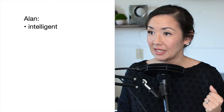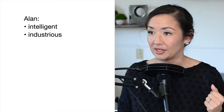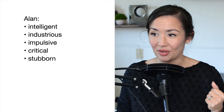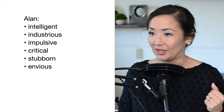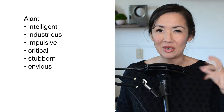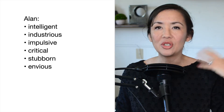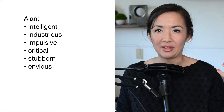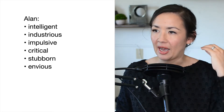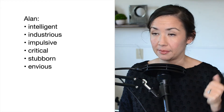Here's a really great example. So here's an individual — his name is Alan. He's intelligent, industrious, impulsive, critical, stubborn, and envious. Now just think: what is your interpretation of Alan? Decide in your own head how you feel about this person, Alan.